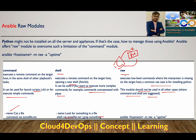Within raw, you only need the syntax: ansible, hostname, hyphen M raw, and whatever operation you want to perform. That's the Ansible raw module. Try playing around with it — uptime, git version, or any packages you've installed — and share your experience in the comments. See you in the next lecture, have a nice day.